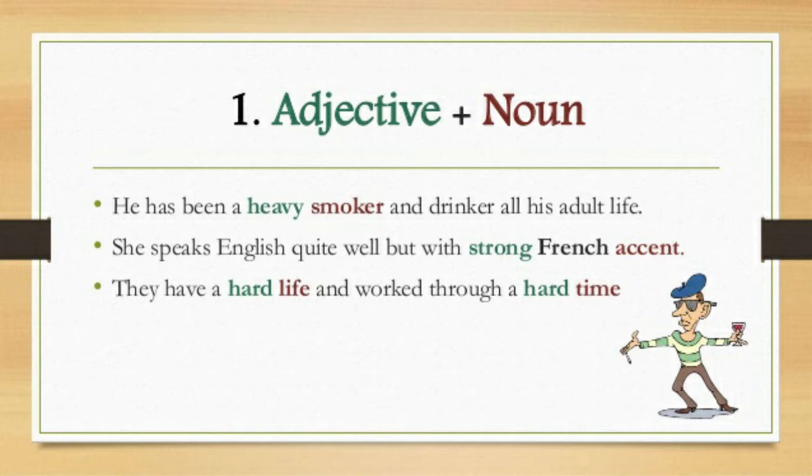Let's see some examples. 'He has been a heavy smoker and drinker all his adult life.' Here, 'heavy' is an adjective and 'smoker' is a noun — we understand the act of occurring side by side: 'heavy smoker' is adjective plus noun. Is it clear?